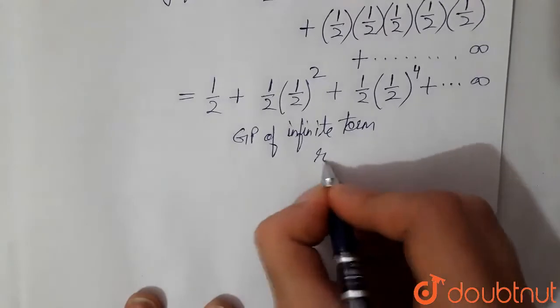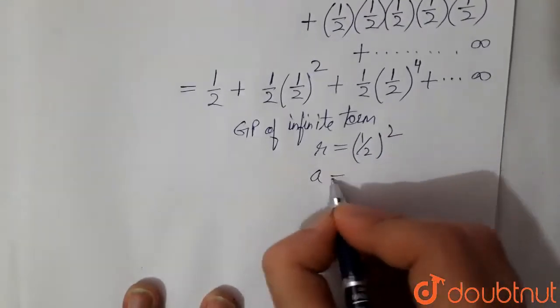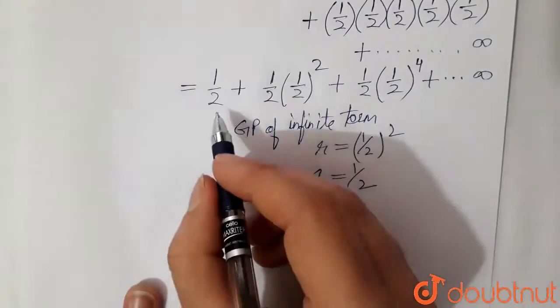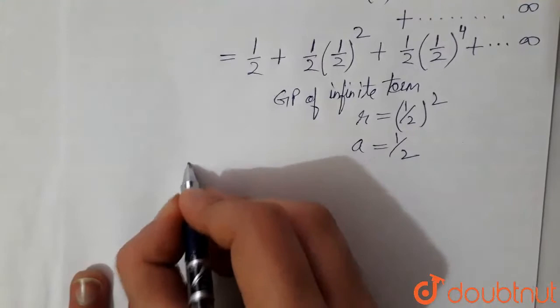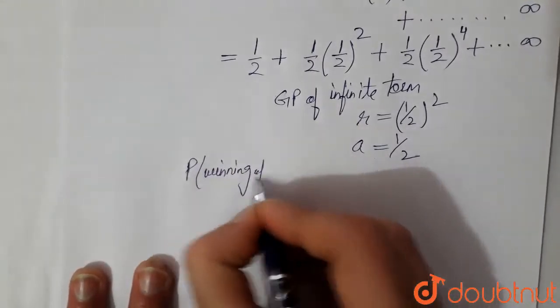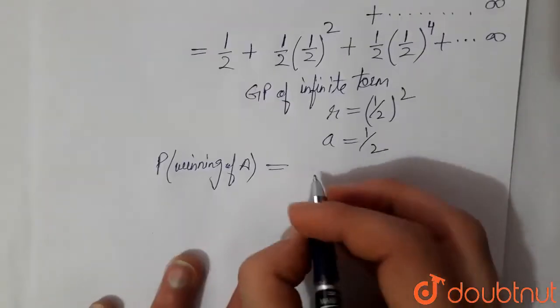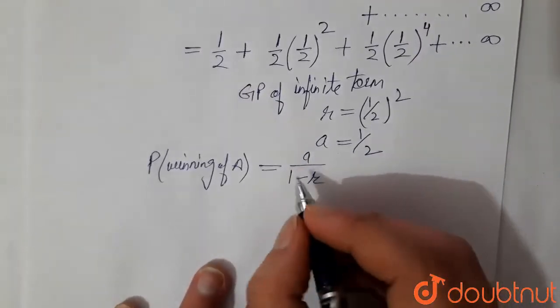Here, common ratio is 1 by 2 whole square and first term is 1 by 2, and this is sum of GP. So probability of winning of A would be sum of GP. Sum of GP is A over 1 minus R, sum of infinite GP.